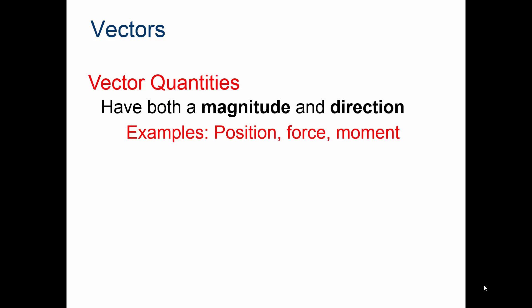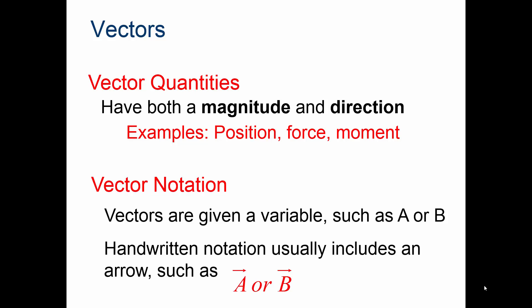So, vector. When we talk about vectors, or vector quantities, that means they have magnitude and direction. Examples are position, force, or moment. Vector notation: vectors are given a variable such as A or B. Handwritten notation only includes an arrow, such as vector A or vector B, noted by the arrow above the A and B.